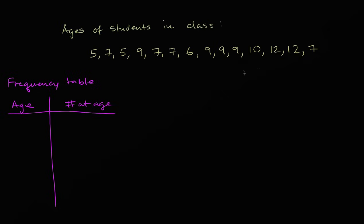So what's the lowest age that we have here? Well, the lowest age is five, so I'll start with five. How many students in the class are age five? Let me scan through — looks like there are only two fives. So I'll write two here; there are two five-year-olds.